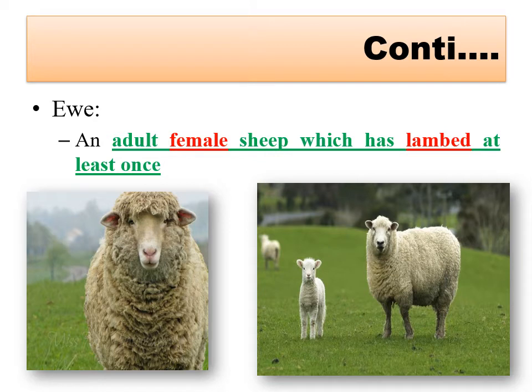A ewe is an adult female sheep which has lambed at least once. The female hogget starts from six months of age to first lambing, and after lambing it is called a ewe. So a ewe is a female sheep which has given birth to a young one at least once.